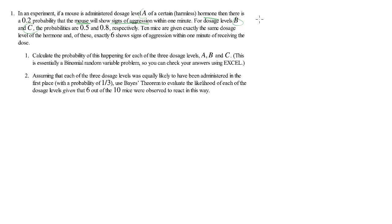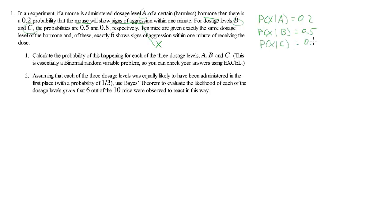We'll call regression event X. The probability of X given dosage A is 0.2, the probability of X given dosage B is 0.5, and the probability of X given dosage C is 0.8. So the higher the dosage — assuming B is higher than A and so forth — the higher the probability of the mouse showing some sort of regression.